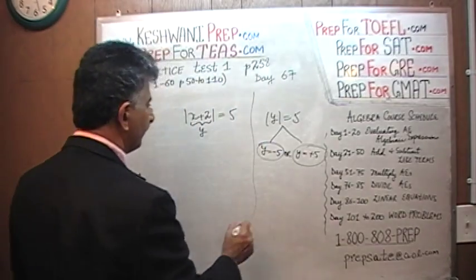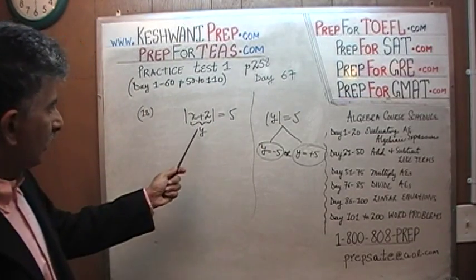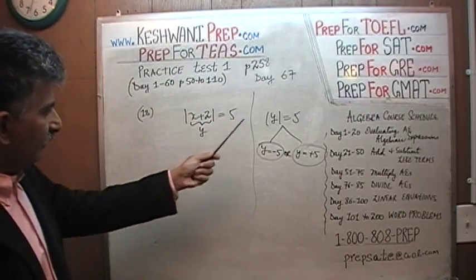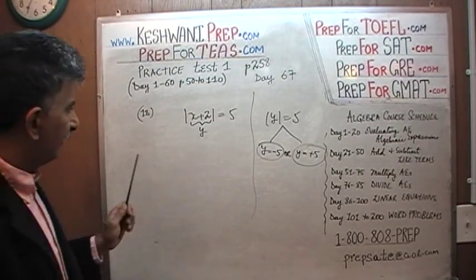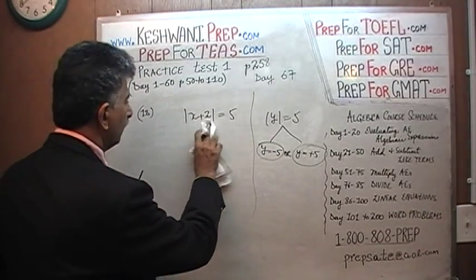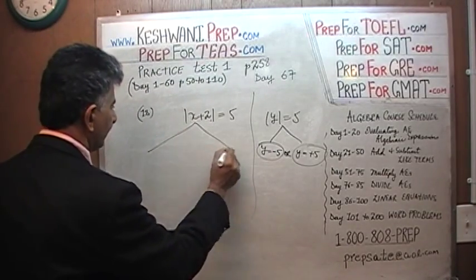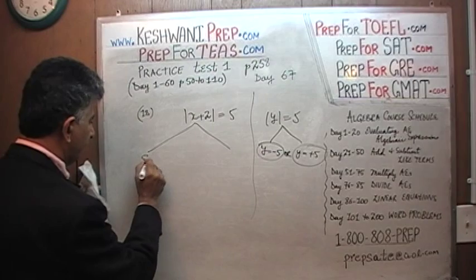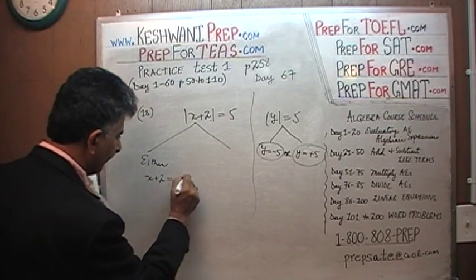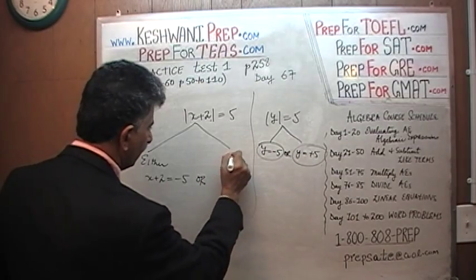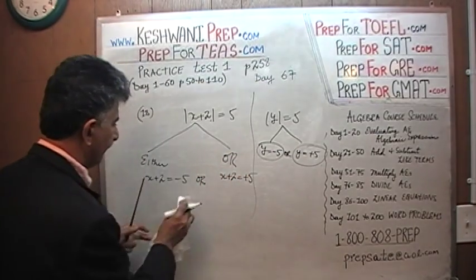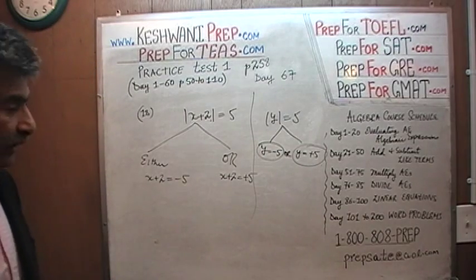The exact same thing is going on here. Instead of y, we have x plus 2 — pretend that x plus 2 is y. So this tells us that x plus 2 is equal to negative 5, or x plus 2 is equal to positive 5. Those are the two possible scenarios.